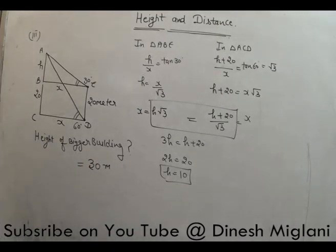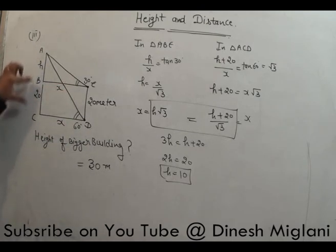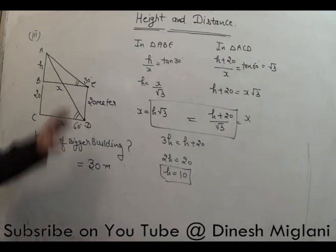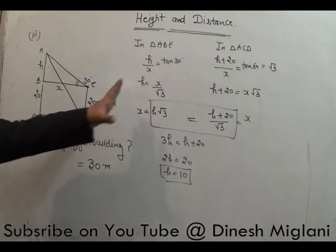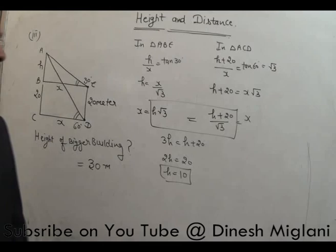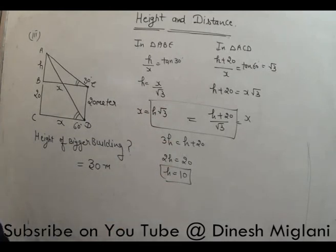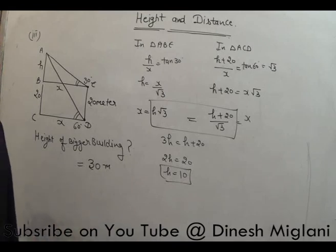Using the shortcut: these angles are 30 and 60, so this is a standard result. The distance portion above the smaller building is half the total, giving 10. So 20 plus 10 equals 30 meters total. Two triangles were formed — triangle ABE and triangle ACD — and we put in respective values to find H equals 10, giving total height 30 meters.